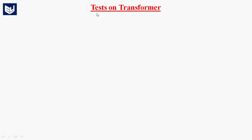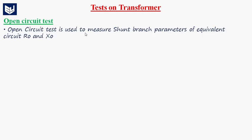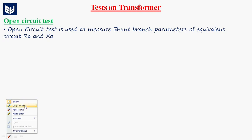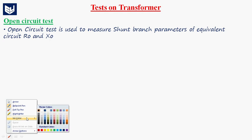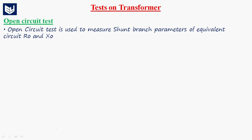Hi guys, now you are going to learn about the open circuit test on transformer. The open circuit test is used to measure the shunt branch parameters of the equivalent circuit. The shunt branch parameters are R0 and X0.